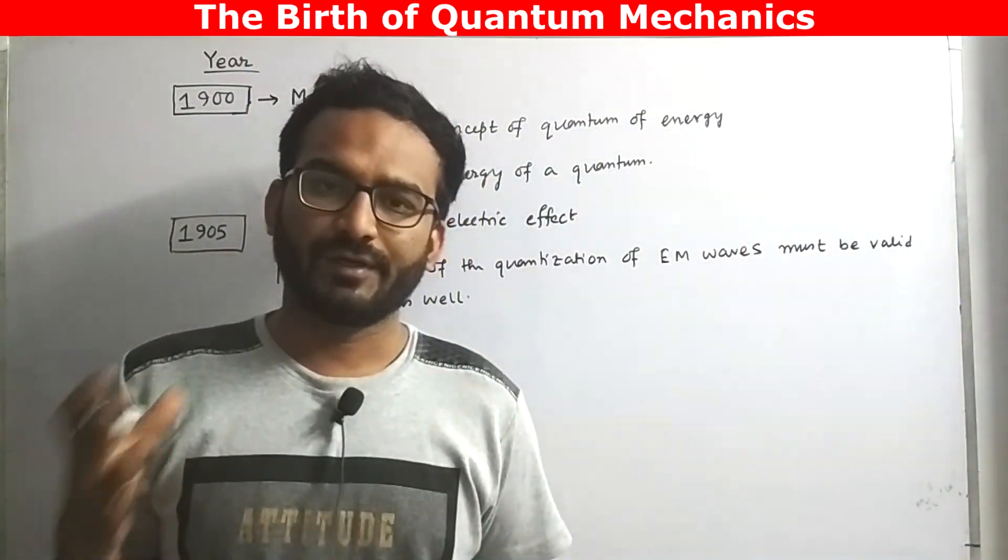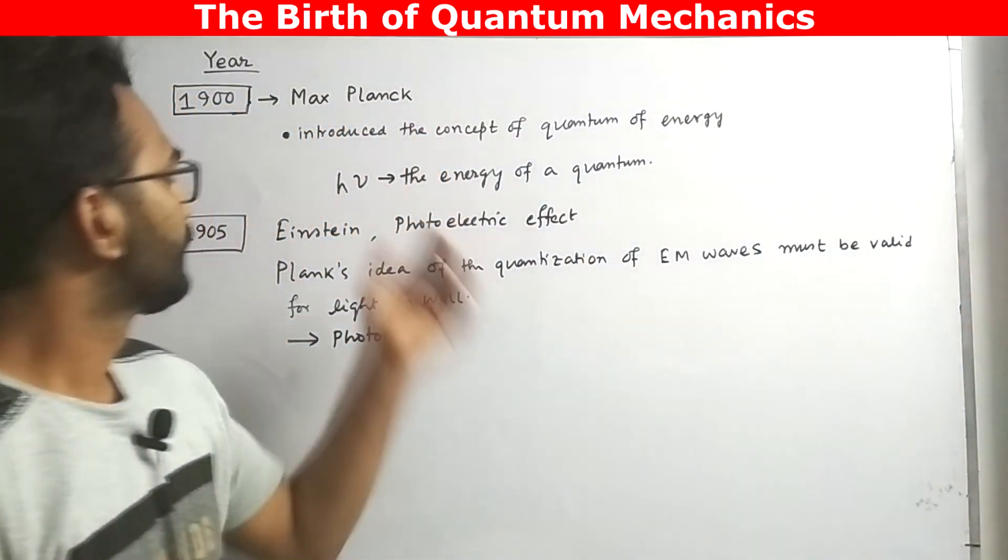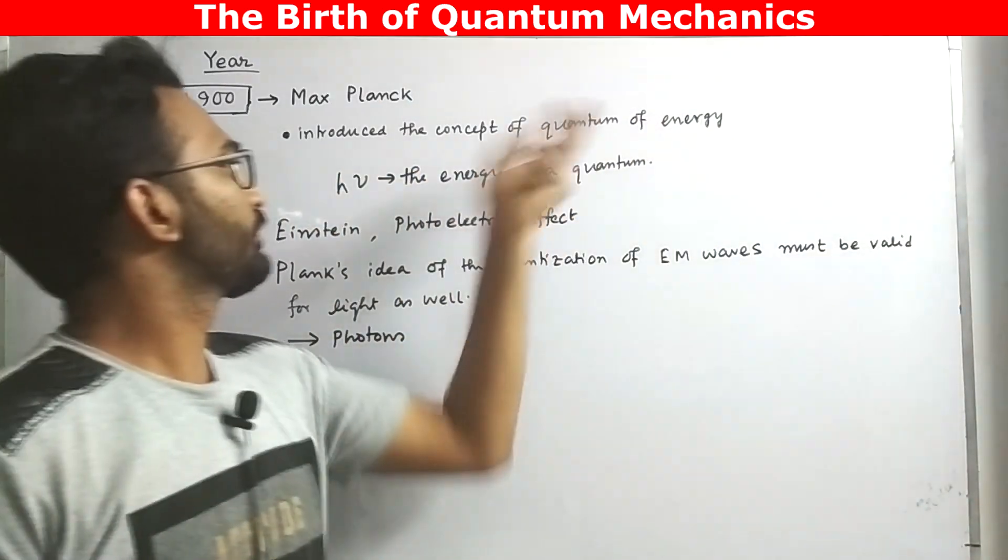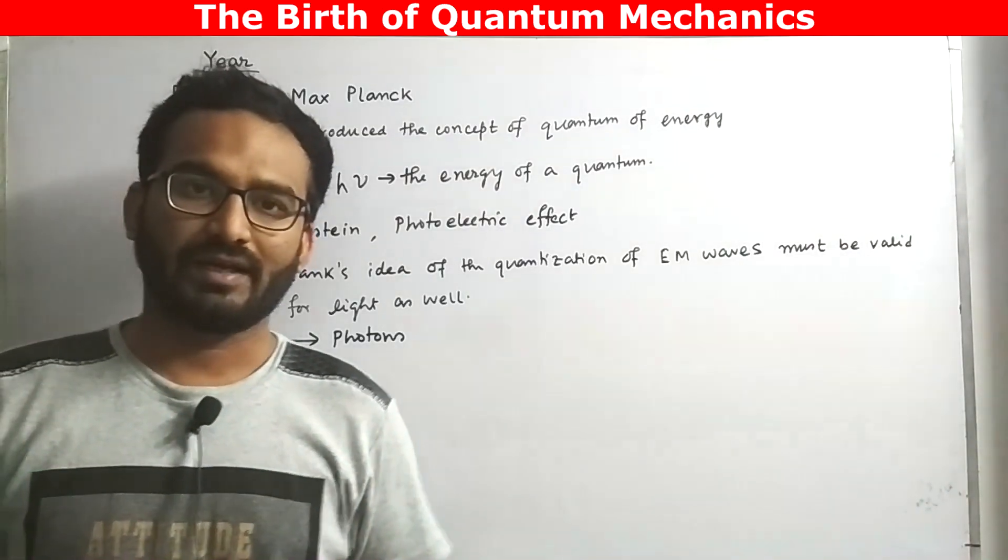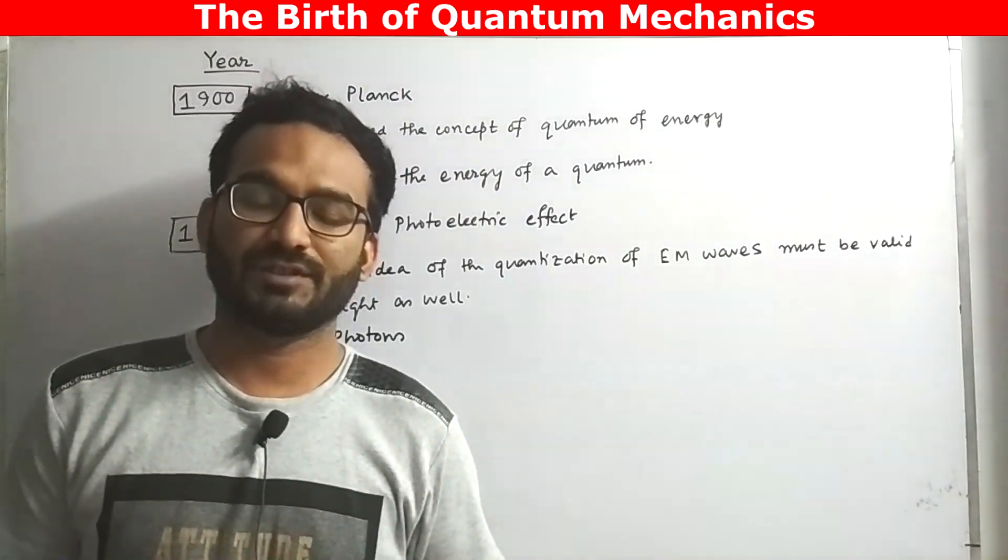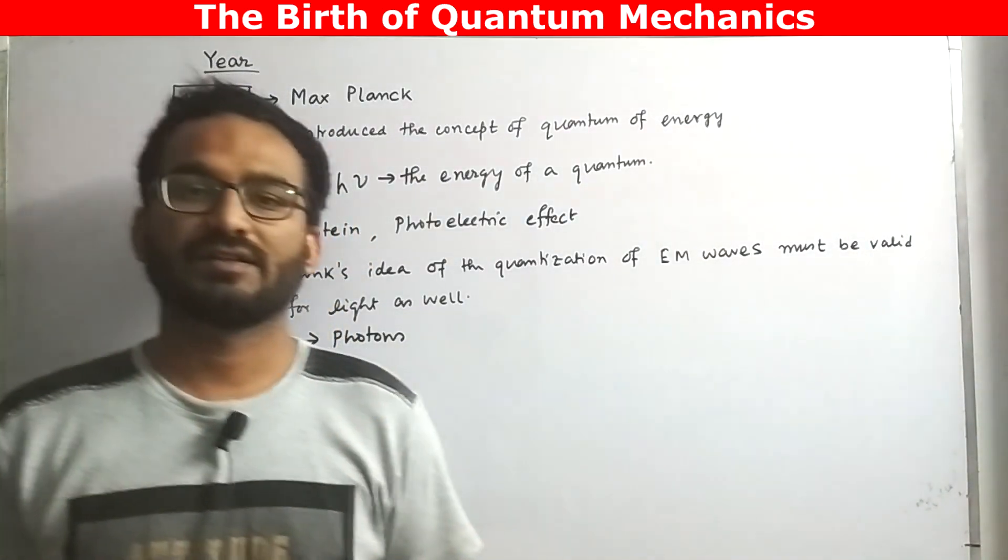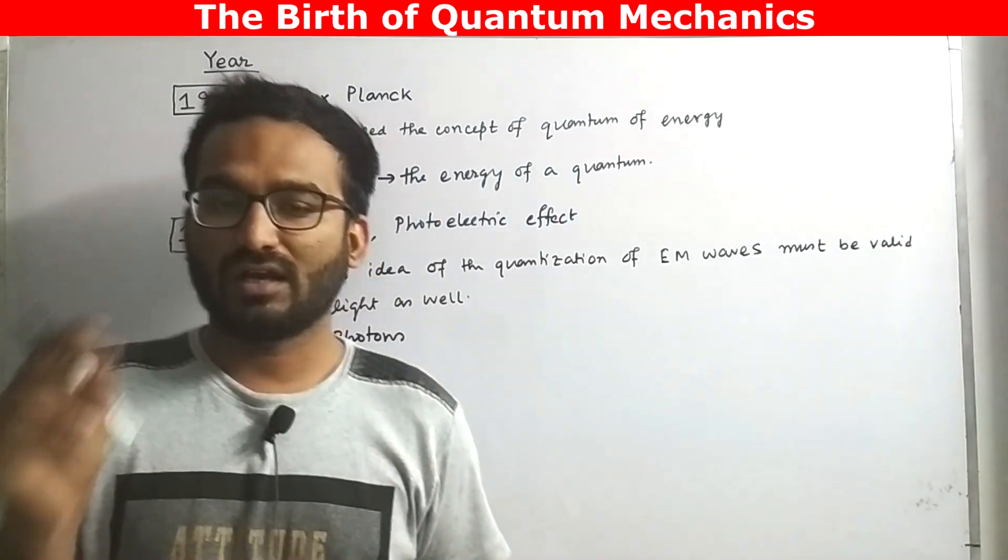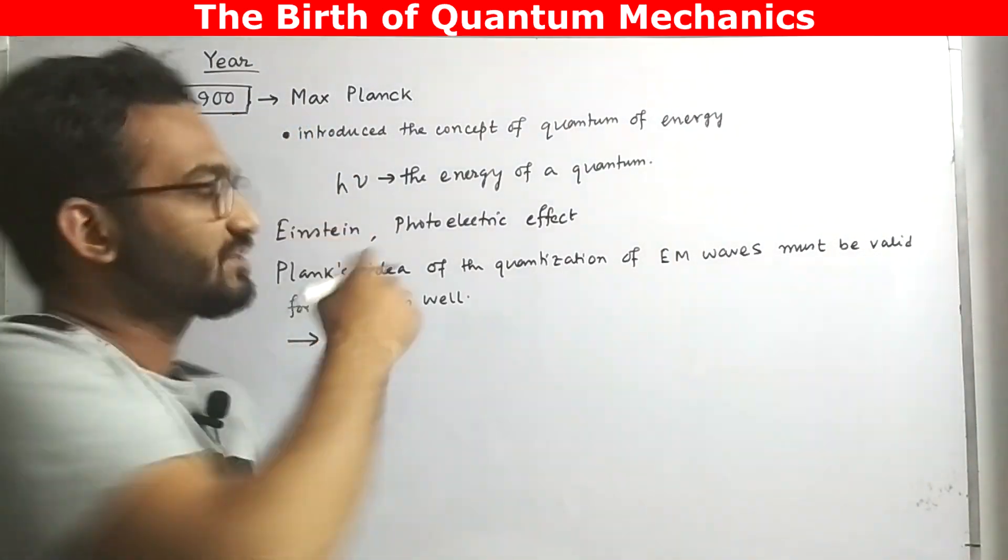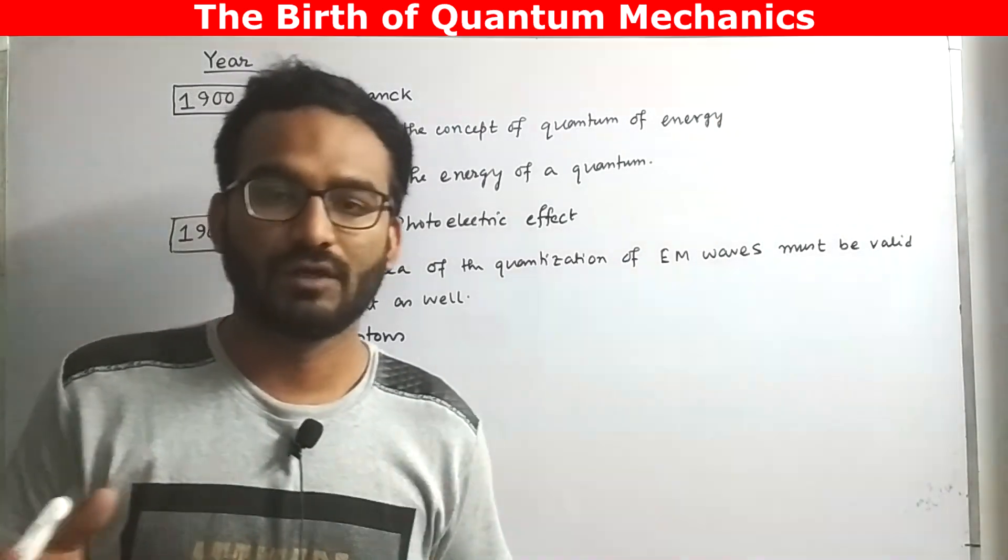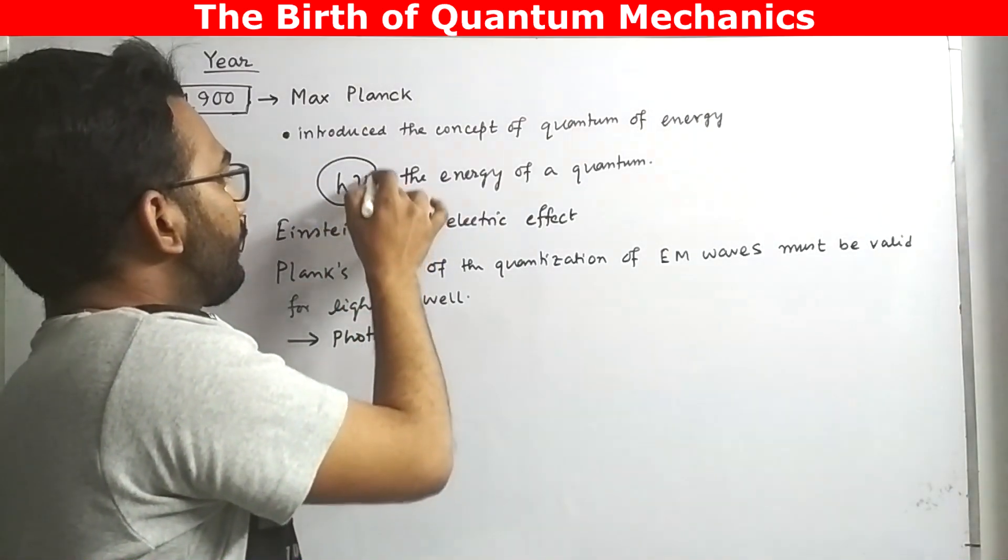The first real breakthrough came in the year 1900 when Max Planck introduced the concept of quantum of energy. According to Max Planck, the energy which is being exchanged between the electromagnetic wave and matter is basically quantized energy. They are discrete in nature and the exchange in energy between the matter and electromagnetic waves occurs in the unit of h nu, the energy of a quantum.